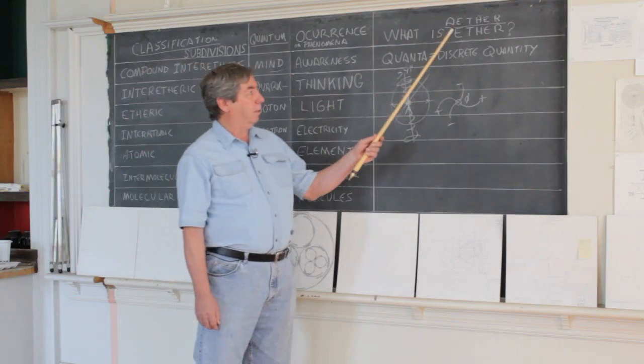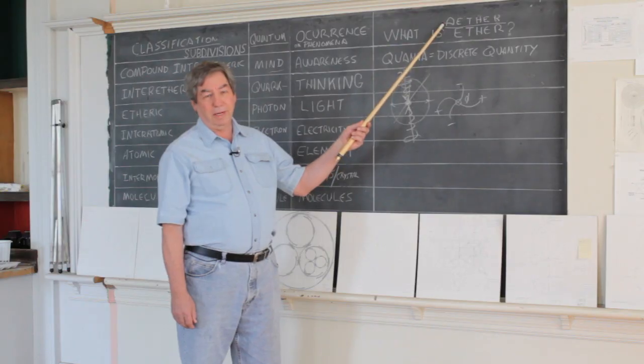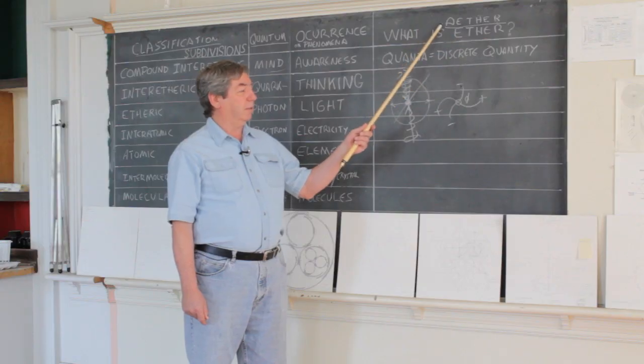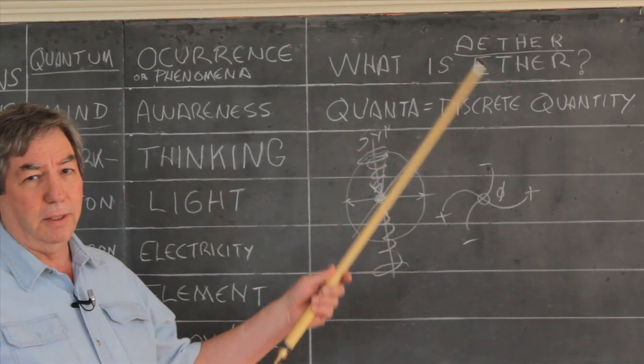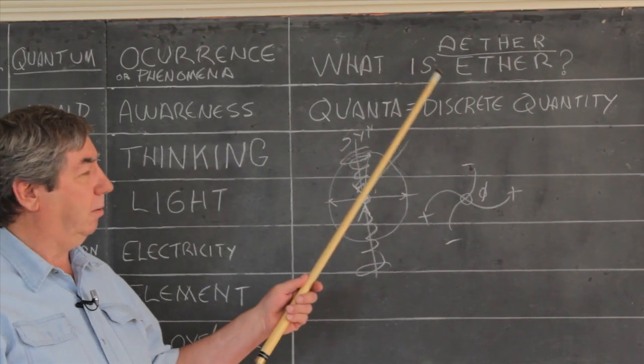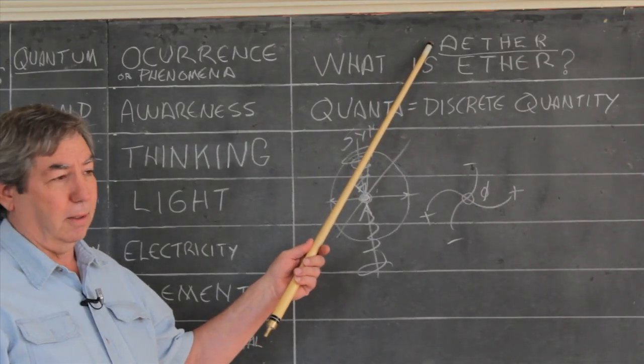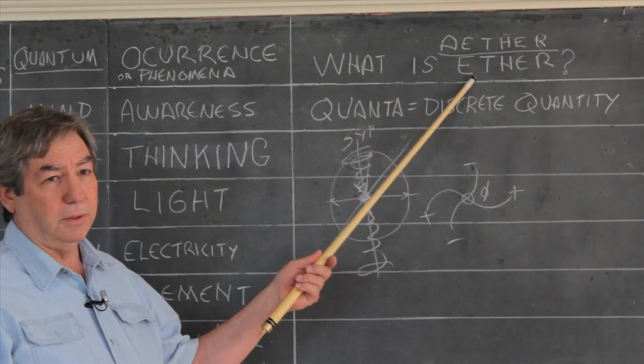A lot of people use this spelling, aether (A-E-T-H-E-R). In my research we found out that ether is undifferentiated ether, so this is more like the source of where everything comes from, and ether is a differentiated form.